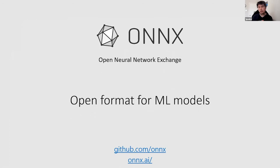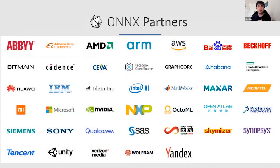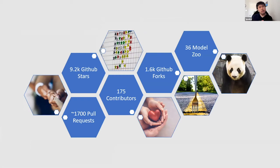There are links out there you can visit to learn more about ONYX. Through the years, many partners have integrated their technology into ONYX. It was started by Microsoft and Facebook. If you look at it on GitHub, it has about 9,000 stars, 1,700 pull requests, around 175 contributors, and it's growing. The ONYX Model Zoo has existing models you can use and integrate into your software and programs.